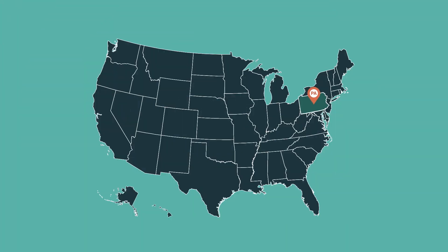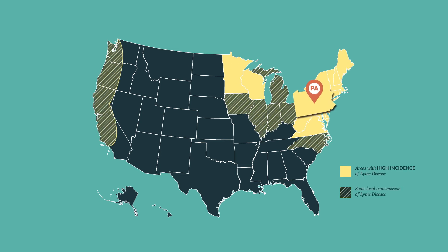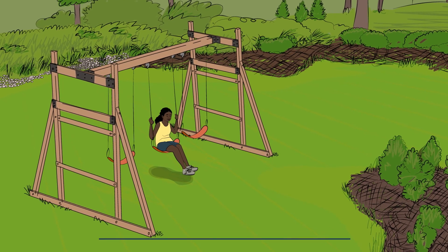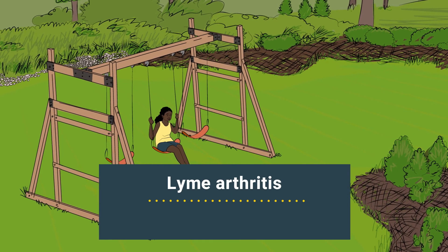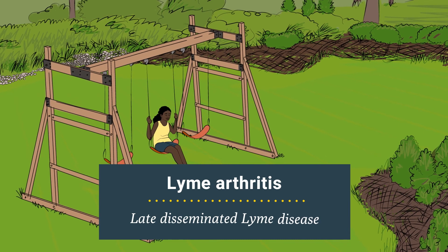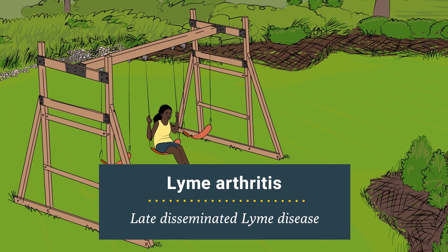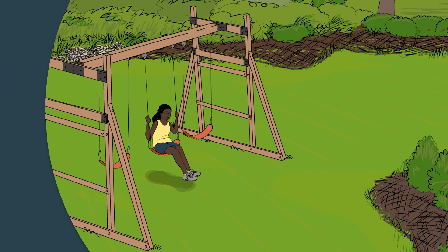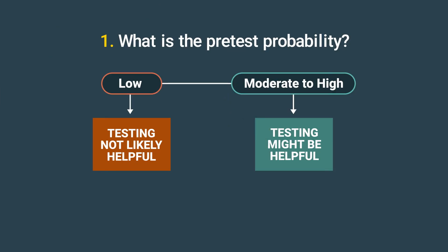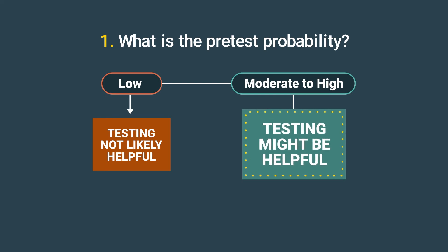Sophia is from Pennsylvania, a state where Lyme disease is common. Even though she doesn't remember a tick bite, she might have been exposed to ticks given her active lifestyle. Sophia's acute knee swelling is characteristic of Lyme arthritis, a manifestation of late-disseminated Lyme disease. Therefore, Sophia has a moderate to high pre-test probability for Lyme disease. For patients with a moderate to high pre-test probability, diagnostic testing might be helpful.